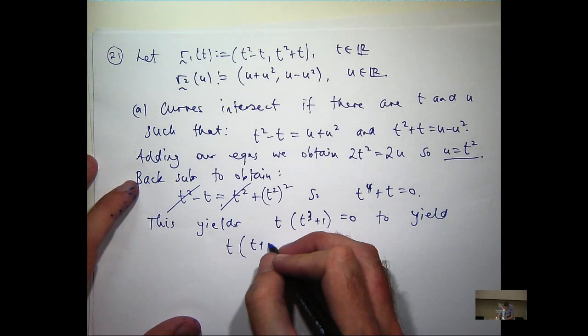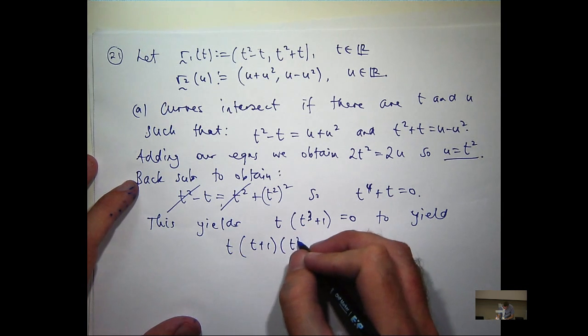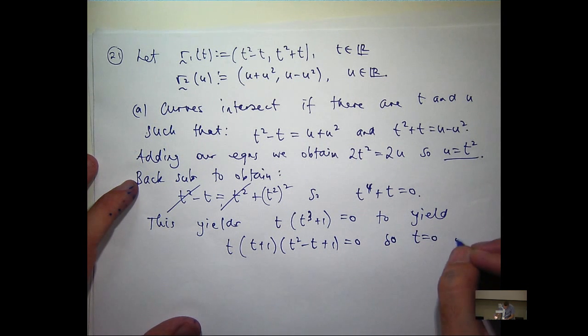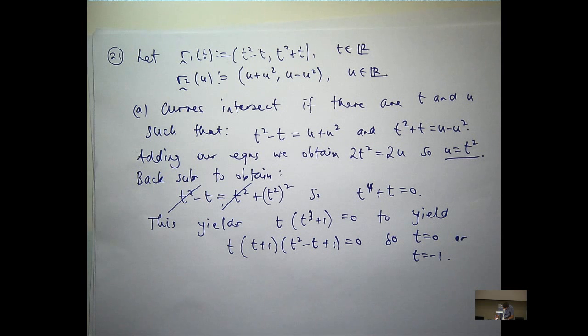So, t equals 0 or t equals minus 1. Now we've got two points of intersection.